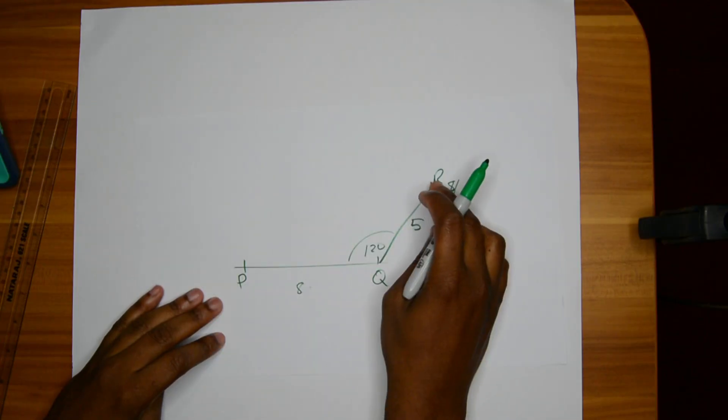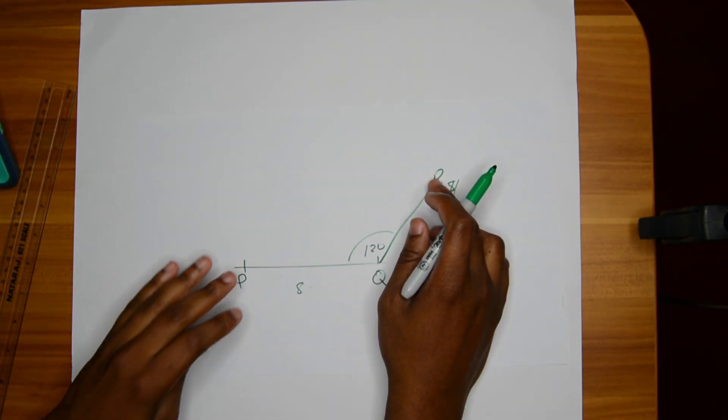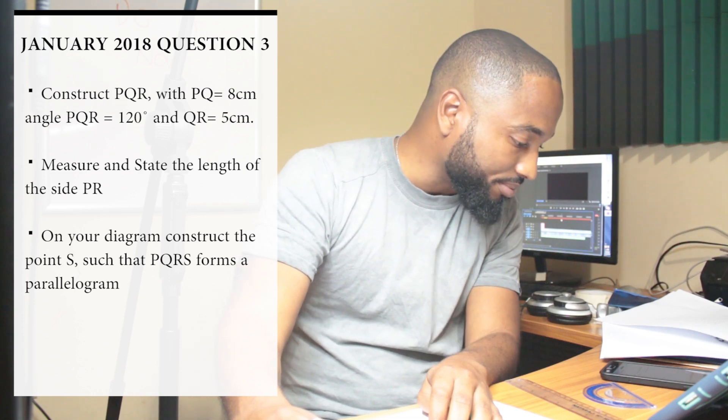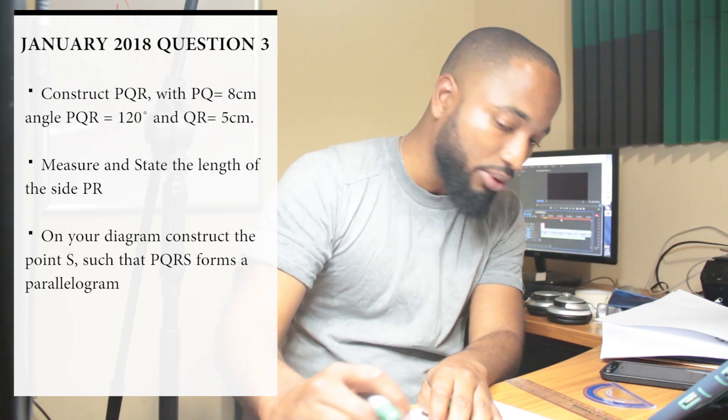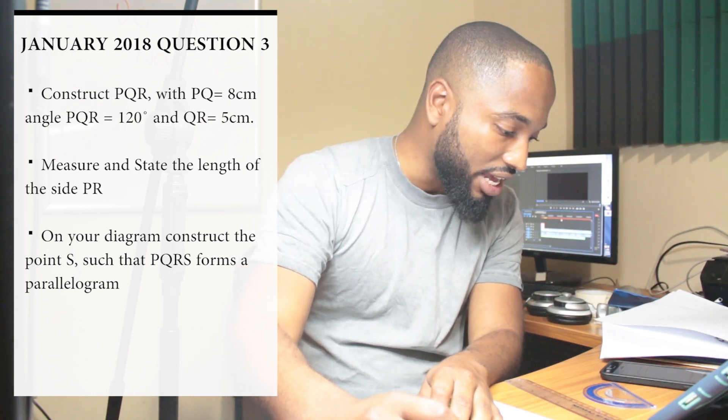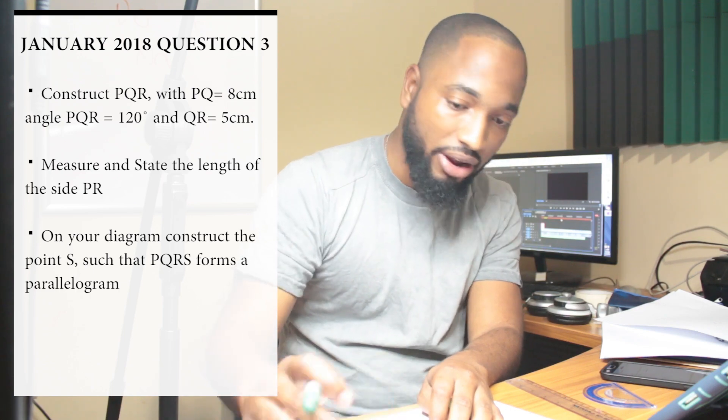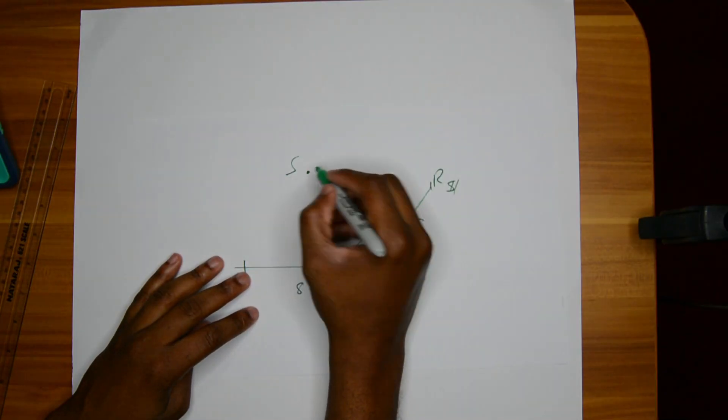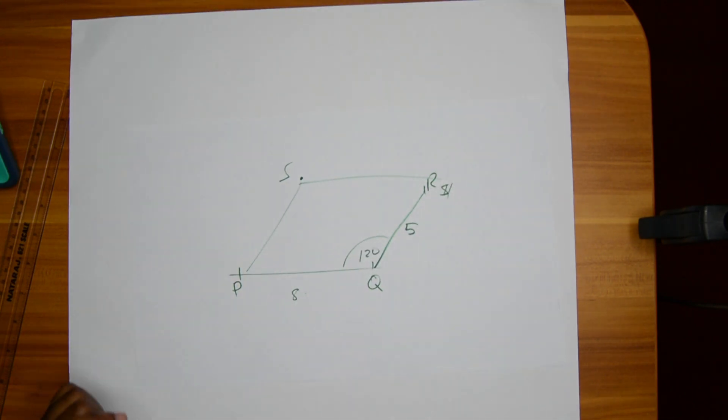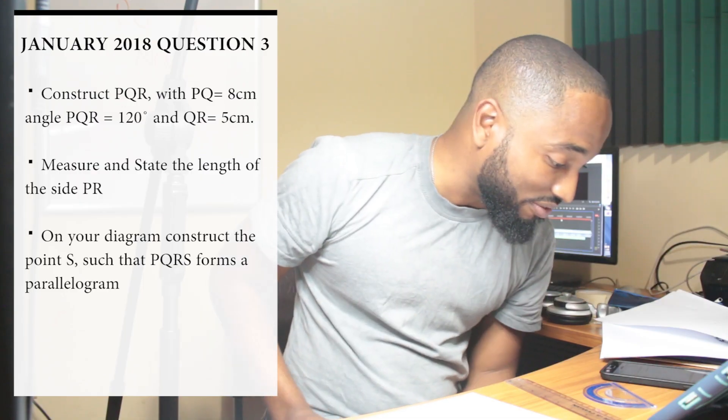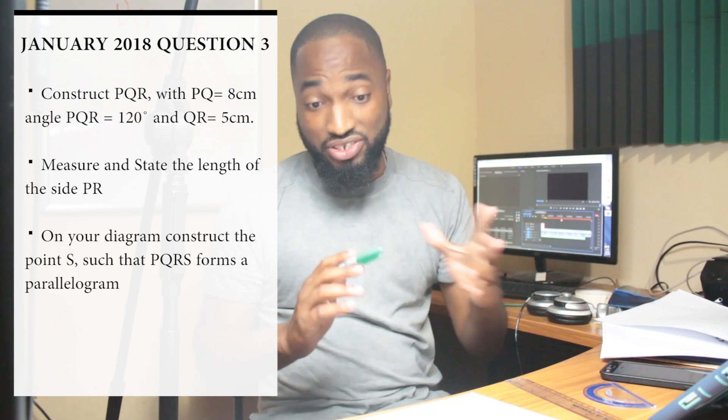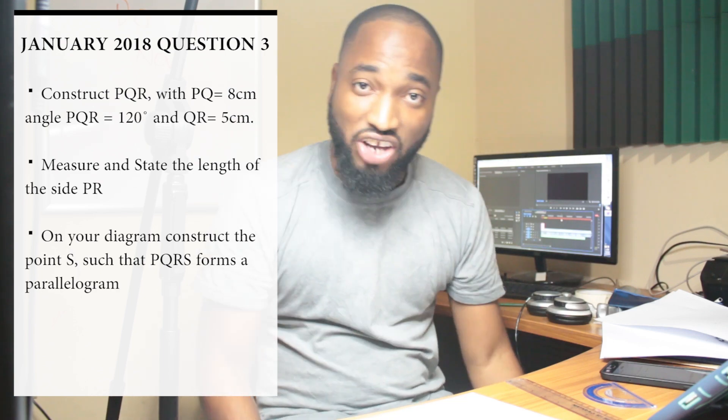Let's see what's next. Part two: measure the length of PR. Part three: on the diagram construct the point S such that PQRS forms a parallelogram. So S coming up here and you have a parallelogram. That's it, 7 marks. Pretty simple construction question. This was like an easy question.